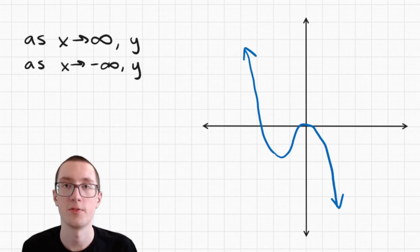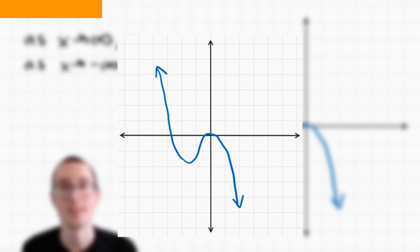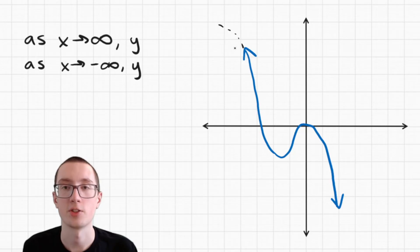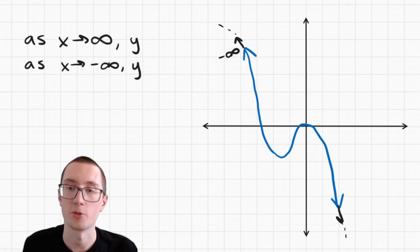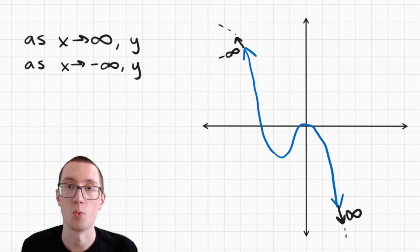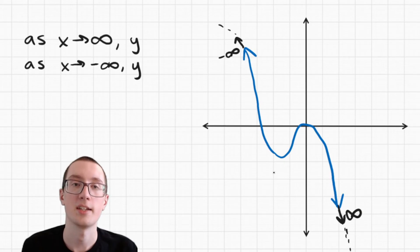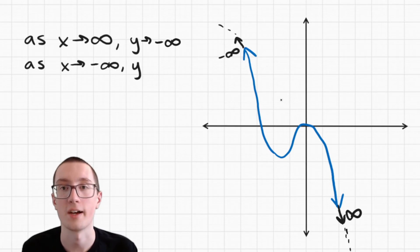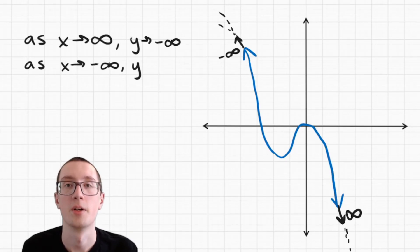Here's another example. Go ahead and pause the video, try to figure out the end behavior of this graph, and then unpause and see how you did. All right, so first let's label x. On this side it's going infinitely to the left, so this is approaching negative infinity. And here it's approaching to the right, so this is approaching positive infinity. As x approaches infinity, what is y doing — is it going up or down? In this case, as the graph is going to the right, the y value is going down. So as x approaches infinity, y approaches negative infinity. Now over here, as x goes farther and farther to the left, the graph is also going up and up and up. So y is approaching positive infinity. This is our final end behavior.